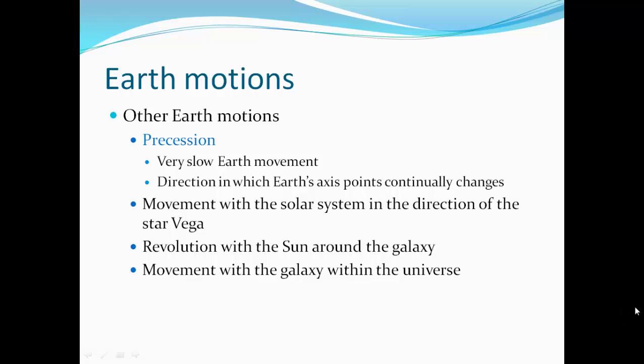Precession, a very slow Earth movement. The direction which Earth's axis points continually changes. So even though it's tilted at 23 and a half degrees, it kind of changes slightly as Earth kind of moves in precession. Movement of the solar system is in the direction of star Vega. So the whole solar system is moving towards Vega. And then the whole solar system is revolving with the sun around the galaxy. And moving with the galaxy, the whole galaxy is also moving within the universe. So everything's constantly in motion.